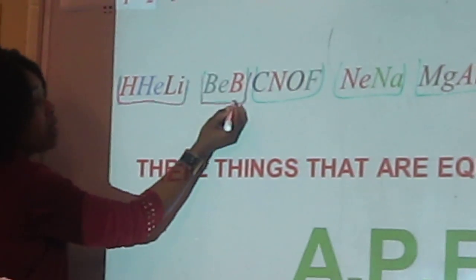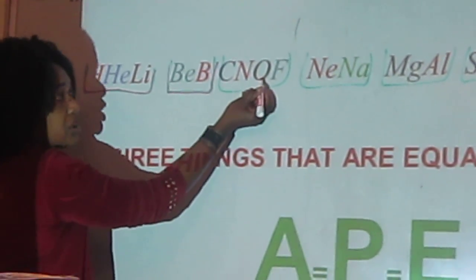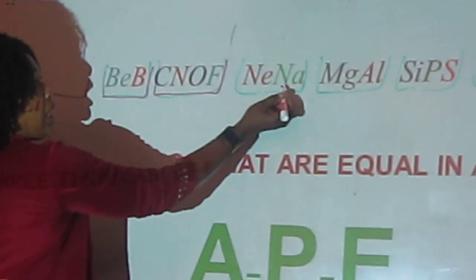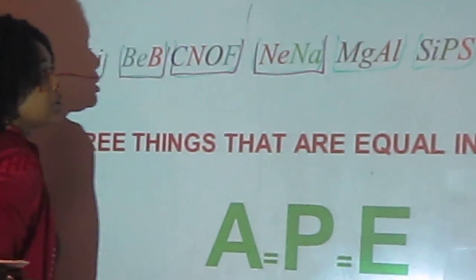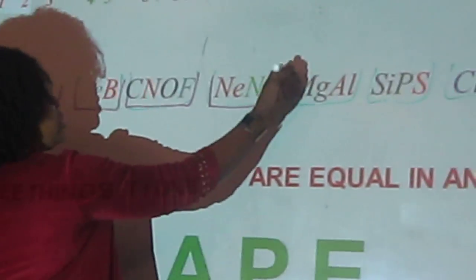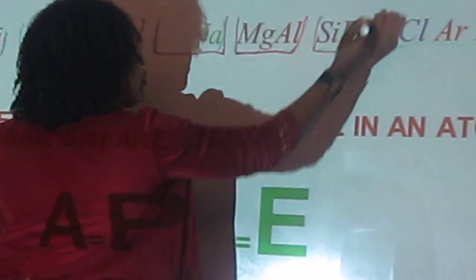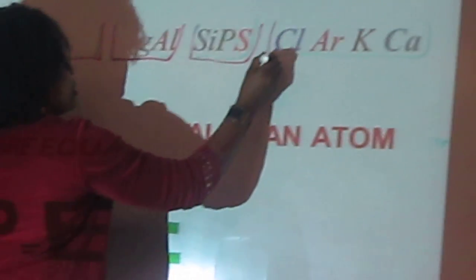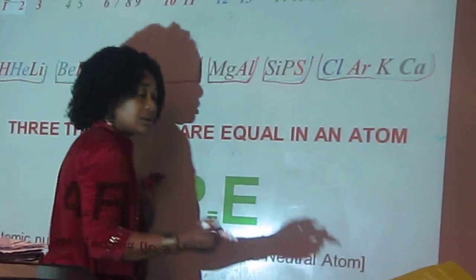Beryllium boron, B, carbon nitrogen, oxygen, and fluorine. Neon and sodium. Nena. Magnesium and aluminum. Mega. Silicon, phosphorus, and salt. Sips. Chlorine, argon, potassium, and calcium.